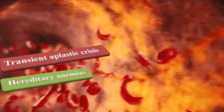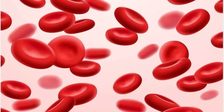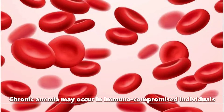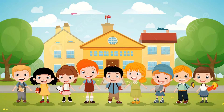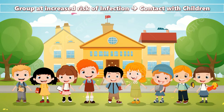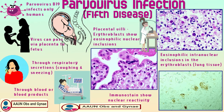Chronic anemia may occur in immunocompromised individuals. The group at increased risk of infection is those in daily contact with children, either at school or at home. Parvovirus B19 infects only humans. The virus passes via the placenta to the fetus, and is transmitted through respiratory secretions such as coughing or sneezing, through blood products, or through blood in the placental villi.